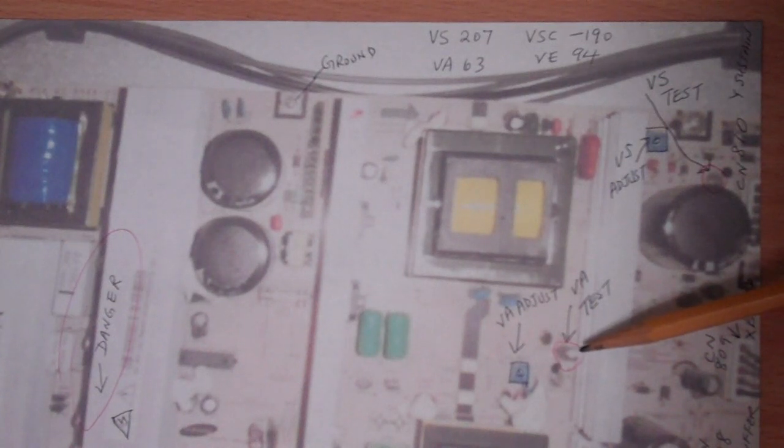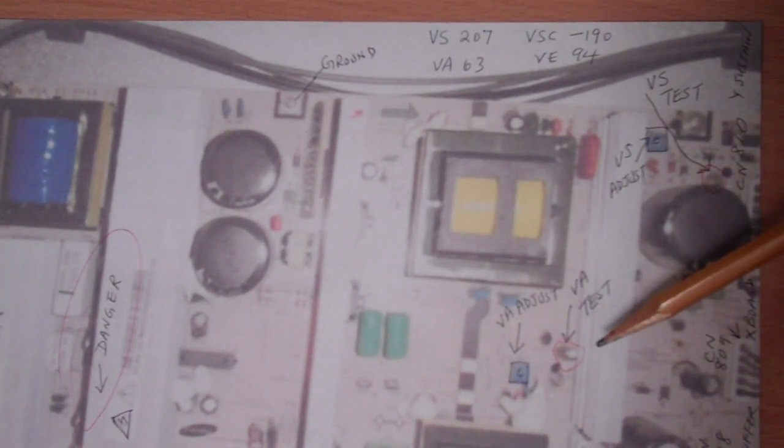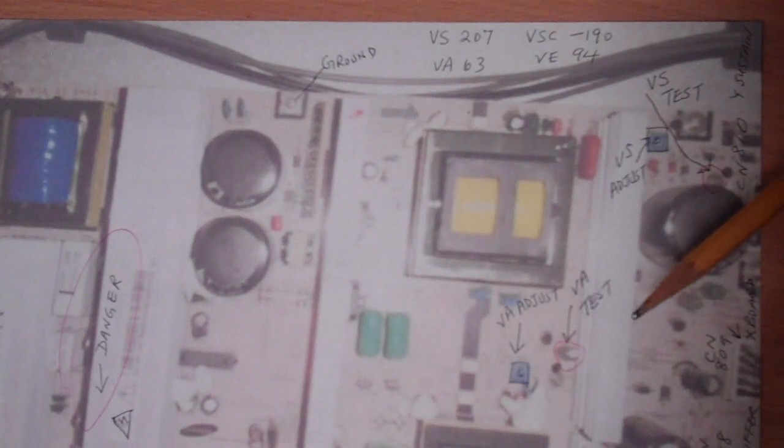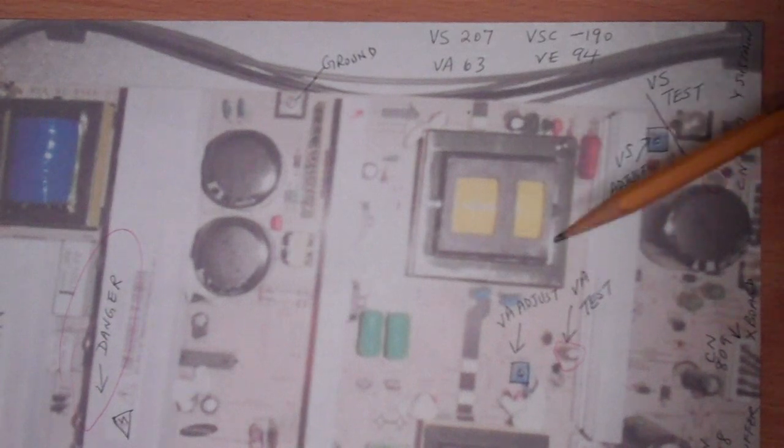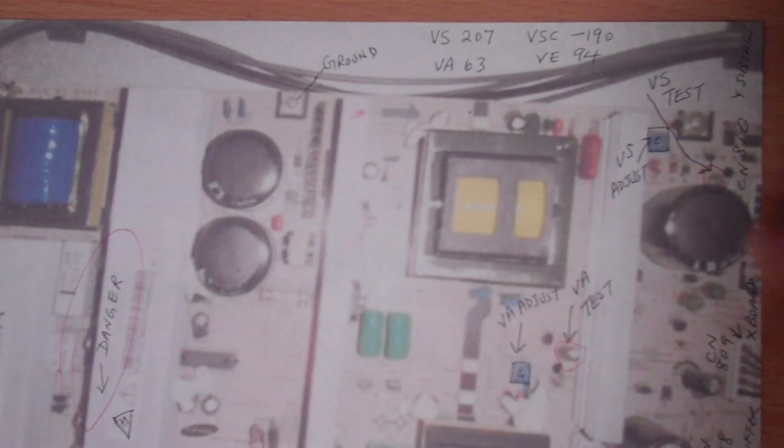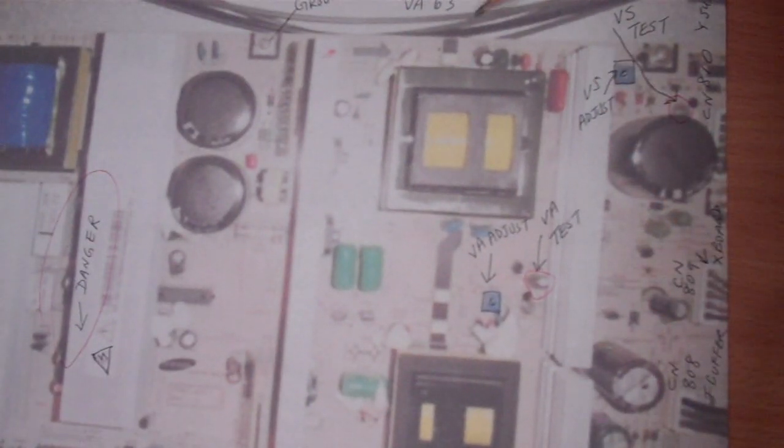It's like a quarter of an inch, maybe three-eighths of an inch high. You can put your red positive probe here again and your negative over there and read the voltage. It should be 63 on this board. If those two voltages check out, then you're probably good unless your television is not turning on.